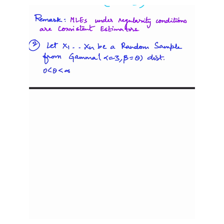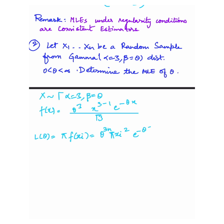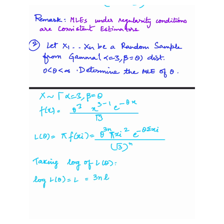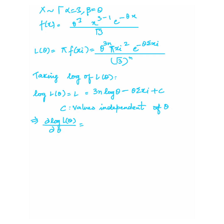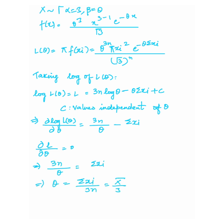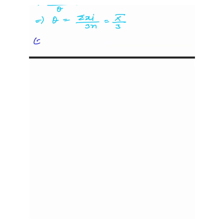Moving on to the next question. We have been given x1, x2, ..., xn as a random sample from a gamma distribution with alpha equals 3 and beta equals theta. We have to find the MLE of theta by writing the f(x) of the given distribution, then taking the likelihood function as the product of f(x)'s and taking the log. Differentiating the log likelihood function with respect to theta and setting it equal to 0 gives theta equals summation xi upon 3n. Hence, theta MLE equals x-bar upon 3.